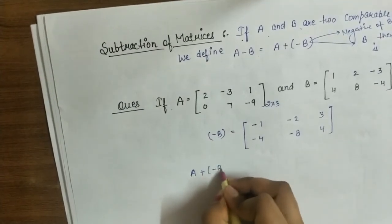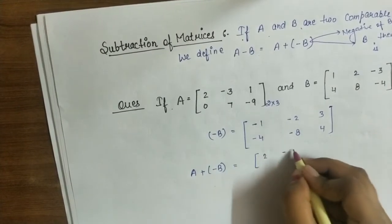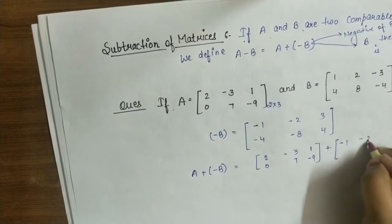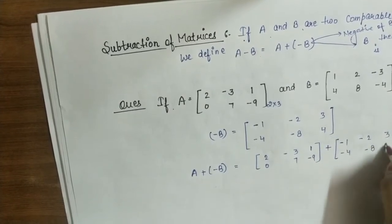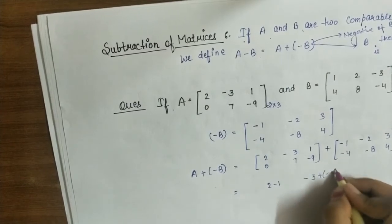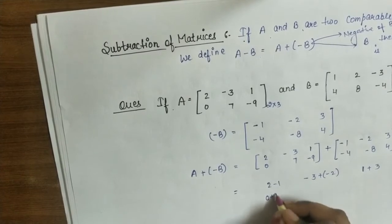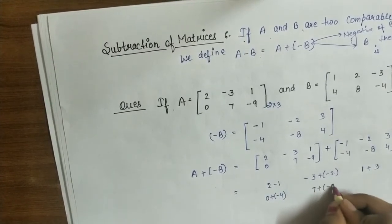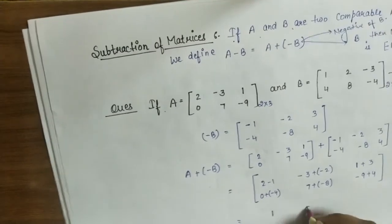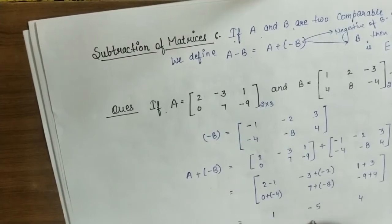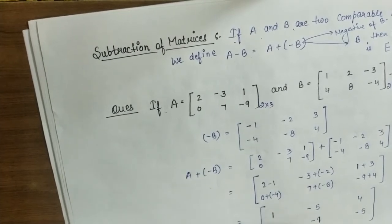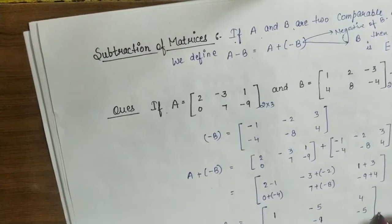A + (-B) equals [2, -3, 1; 0, 7, -9] plus [-1, -2, 3; -4, -8, 4]. Adding corresponding elements: 2+(-1), -3+(-2), 1+3, 0+(-4), 7+(-8), -9+4. So A-B equals [1, -5, 4; -4, -1, -5] of order 2×3.